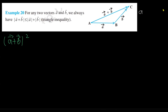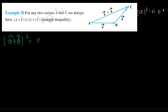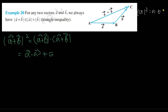You know that |a|² = a · a. That's what I'm going to use here. So I can write |a + b|² as (a + b) · (a + b). Now when we expand this, that is a · a, then a · b, then b · a, and then plus b · b.